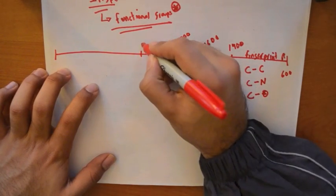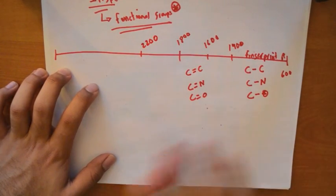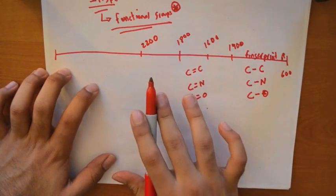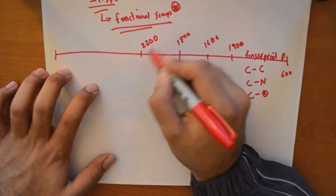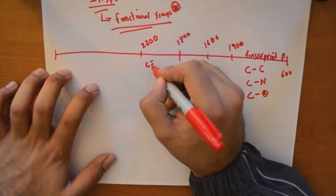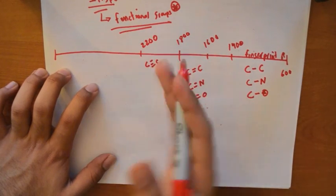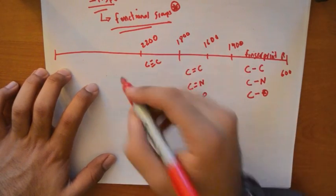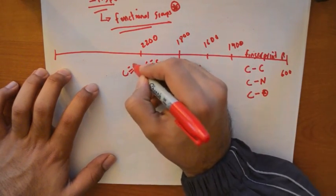Another important one is 2200. 2200 stretch is important because anything close to but below 2200, I'd say 2100, it's a C triple bond C stretch. Anything above 2200, I'd say 2220, 2230, it could be a C triple bond N stretch.